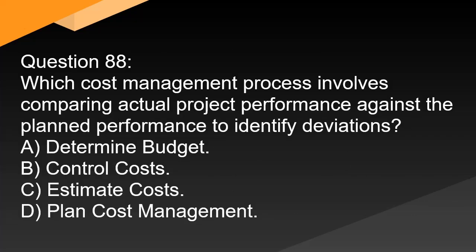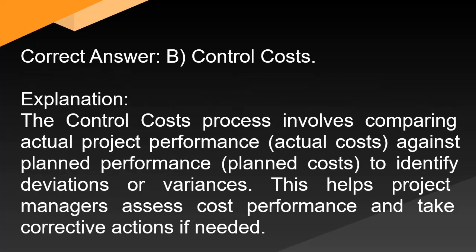Question 88: Which cost management process involves comparing actual project performance against the planned performance to identify deviations? A. Determine budget. B. Control costs. C. Estimate costs. D. Plan cost management. Correct answer: B. Control costs. Explanation: The control costs process involves comparing actual project performance (actual costs) against planned performance (planned costs) to identify deviations or variances. This helps project managers assess cost performance and take corrective actions if needed.